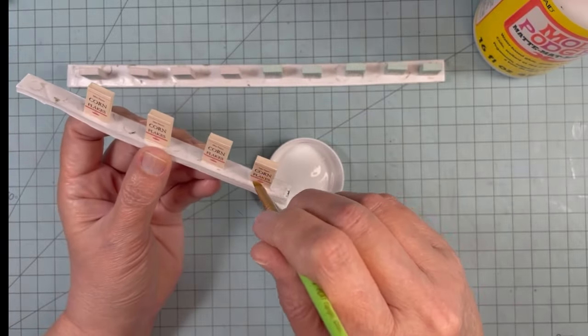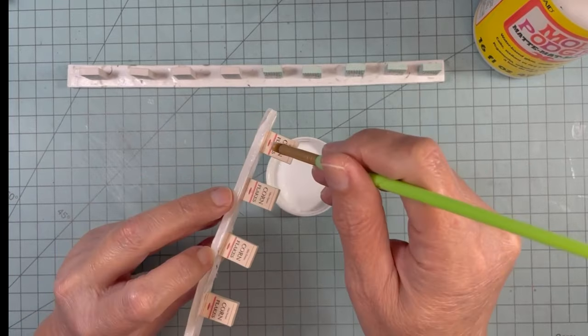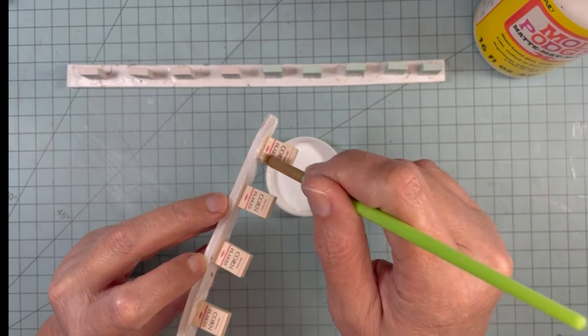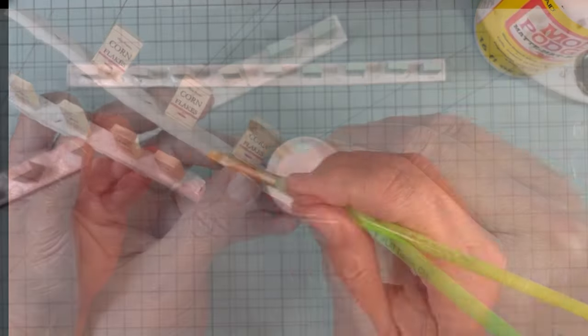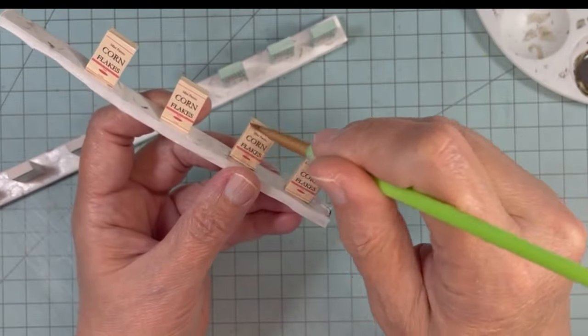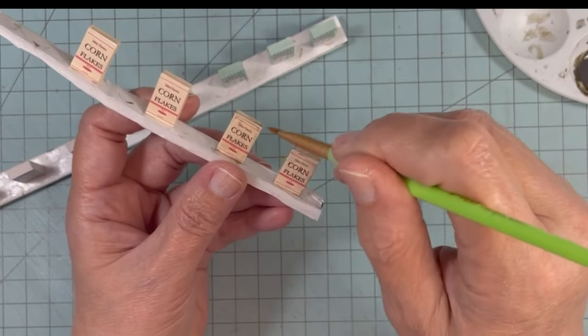I'm giving them a coat of matte Mod Podge, then a light coat of a brown paint and water wash.